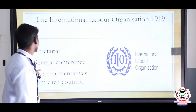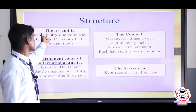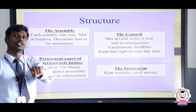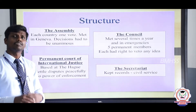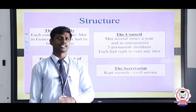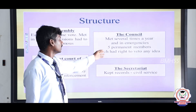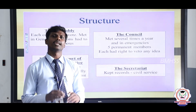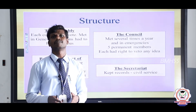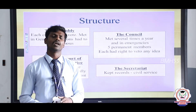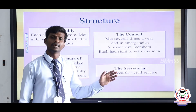Quick recap of the organs of the League of Nations. First, the General Assembly: each country had one vote, it met in Geneva at least once, and decisions had to be unanimous. Second, the Council: it met many times during emergencies, had 5 permanent members (which later changed), and each had veto power. Veto means a negative vote — if you disagree with a decision, you can use your veto power against it.